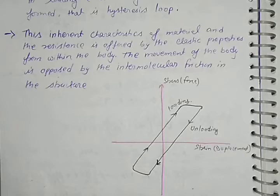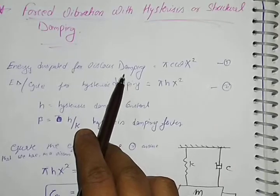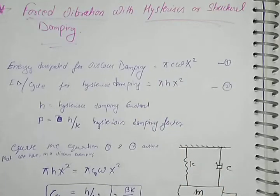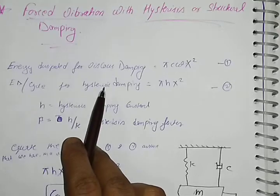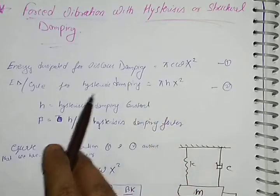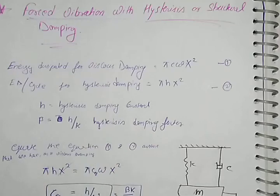This hysteresis curve developed in loading and unloading is called structural damping. Now we calculate the energy dissipation from this loop. For viscous damping, the energy dissipated per cycle is π·c·ω·x², where x is the amplitude. For hysteresis damping, the energy dissipated per cycle is π·h·x², where h is the hysteresis damping constant. The hysteresis damping factor is β = h/k.